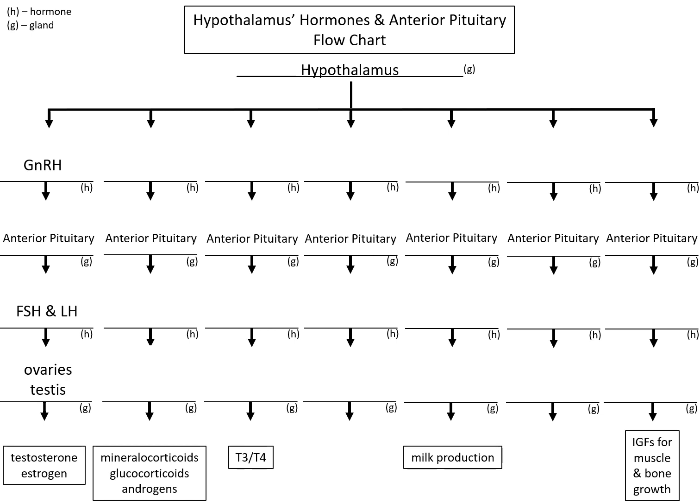Now let's look at mineralocorticoids, glucocorticoids, and androgens — the focus here is the adrenal cortex. We remember from the previous slide that to get the anterior pituitary and the adrenal cortex to communicate, we release ACTH. So what does the hypothalamus release to trigger the anterior pituitary to release ACTH? It's corticotropin releasing hormone. When the hypothalamus picks up that we need something from the adrenal cortex, it releases corticotropin releasing hormone, the anterior pituitary reads that and releases ACTH, and off we go.